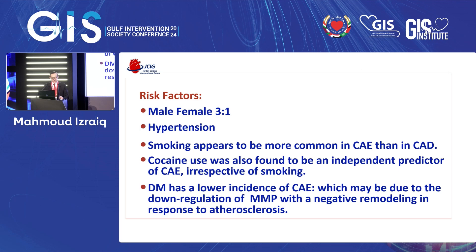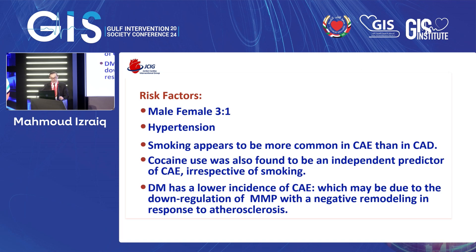Risk factors: Males are three times more affected than females. Hypertension is recognized as a significant risk factor. Smoking appears more common in coronary ectasia than in coronary artery disease. Cocaine use is an independent predictor irrespective of smoking. Diabetes has a lower incidence of coronary ectasia, possibly due to downregulation of MMP with negative remodeling in response to atherosclerosis.